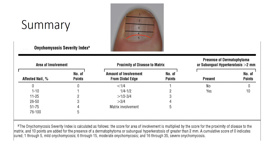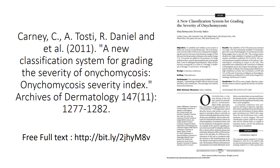To summarize: we've discussed the Onychomycosis Severity Index and how to calculate it. This table, taken from the original paper, shows the three areas — Feature A, Feature B, and Feature C — and how the score is calculated. The paper is available online, published in 2011 in the Archives of Dermatology. If you're regularly treating fungal nails, the OSI is a useful clinical tool and a means to audit your success rate with whatever fungal treatment you happen to be using.